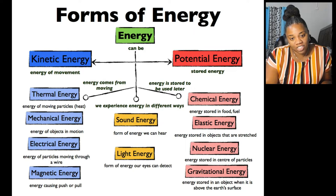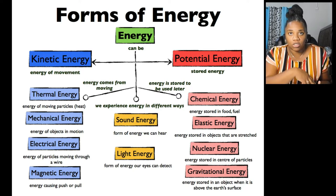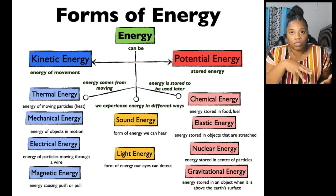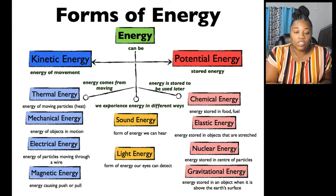The forms of energy include kinetic energy and potential energy. Under kinetic energy, you have thermal energy, which includes energy of moving particles that produces heat. Mechanical energy is the energy of objects in motion. Electrical energy has to do with particles like electrons moving through a wire, and magnetic energy is energy causing push or pull to occur.